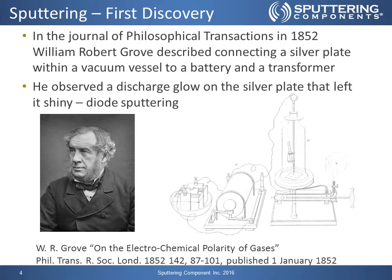In the drawing on this slide you can see on the left a battery and then two wires going to a crude transformer, and from there the wires are going to a vacuum chamber — basically a bell jar with a spike going through the top and down to a silver plate at the bottom. As he applied power in a pulsing fashion, he was actually able to create a glow discharge that started to sputter the plate at the bottom.